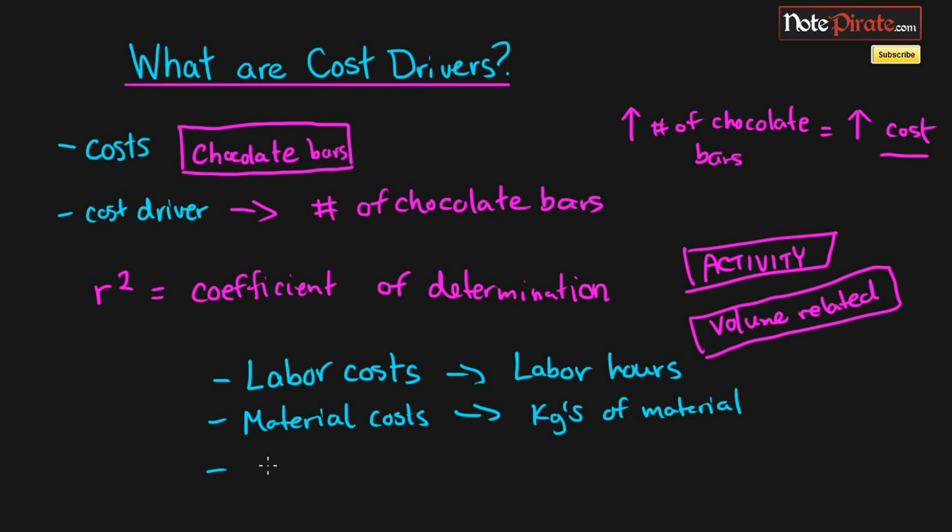And I guess one final one: maybe research and development. We could say the number of products in development will determine our cost in R&D. So as you can see here, there's many different cost drivers you can come up with. However, some are more reflective of the cost than others. So in the next tutorial we'll be talking about, I think, variable and fixed costs, so I'll see you guys in the next one.